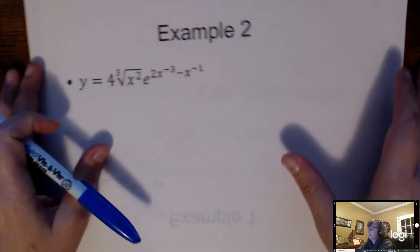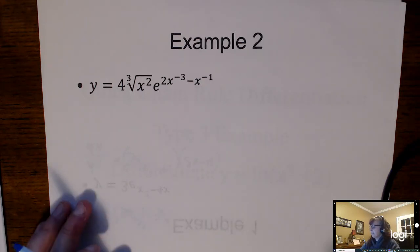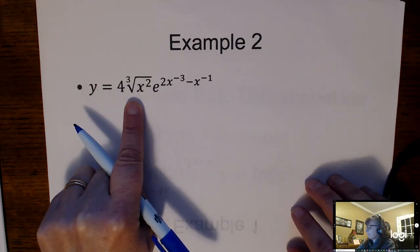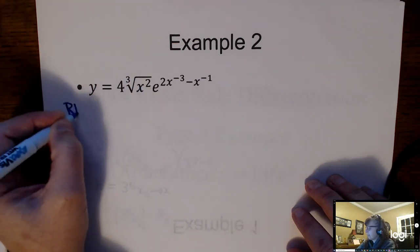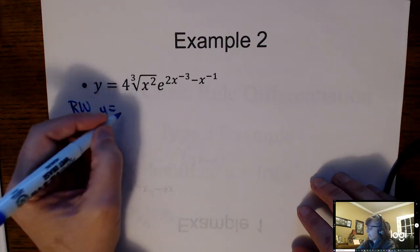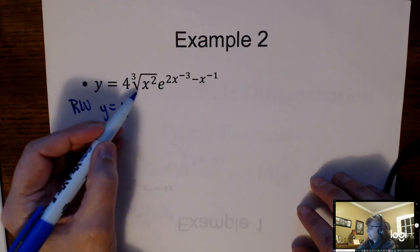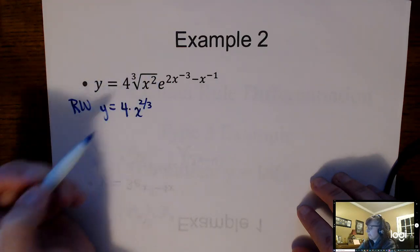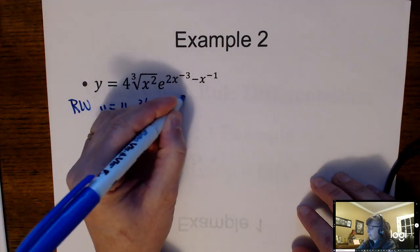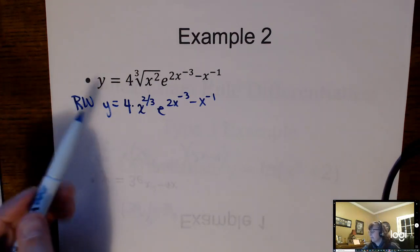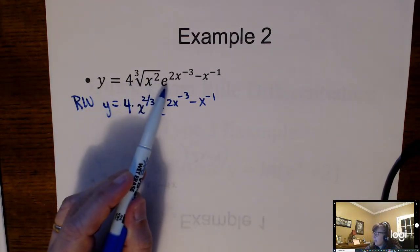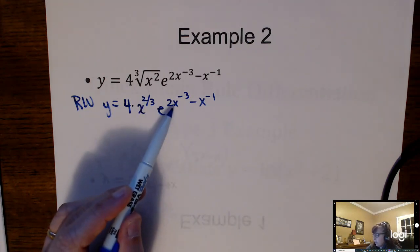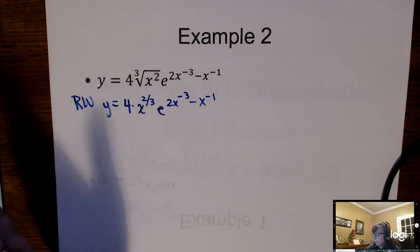This is a complicated one, and it's not necessarily because of the e. You can't have a radical, so let's rewrite this without a radical using rational exponents. This is 4 times — the cube root of x squared is x to the two-thirds — times e to the 2x to the negative 3 minus x to the negative 1. So we didn't take a derivative; we just rewrote.